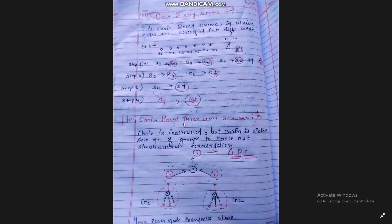The next algorithm is the Data Binary Scheme. It is a chain-based scheme where nodes are classified into different levels. For example, if you have seven nodes and they want to send data to the base station: in the first step, S1 sends its data to S2, S3 sends data to S4, and S5 sends data to S6.